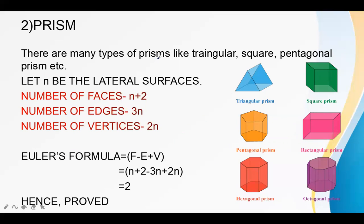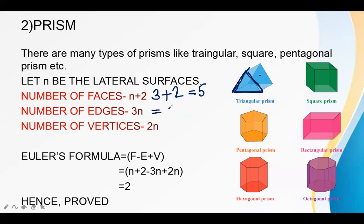There are many types of prisms: triangular prism, square prism, pentagonal prism, rectangular prism, hexagonal prism, and octagonal prism. Let N be the number of edges of the base of a prism. The number of faces will always be N plus 2. For a triangular prism, the number of edges of the base is 3, so 3 plus 2 equals 5 faces. The number of edges is 3N, and the number of vertices is 2N. Putting these into Euler's formula proves that all kinds of prisms are polyhedrons.